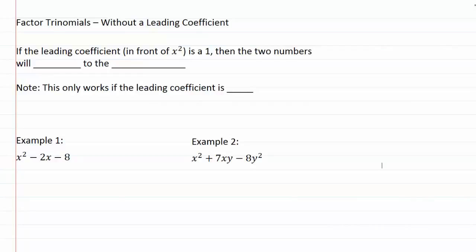Factor trinomials without a leading coefficient. If the leading coefficient in front is a one, then the two numbers will add to the middle.